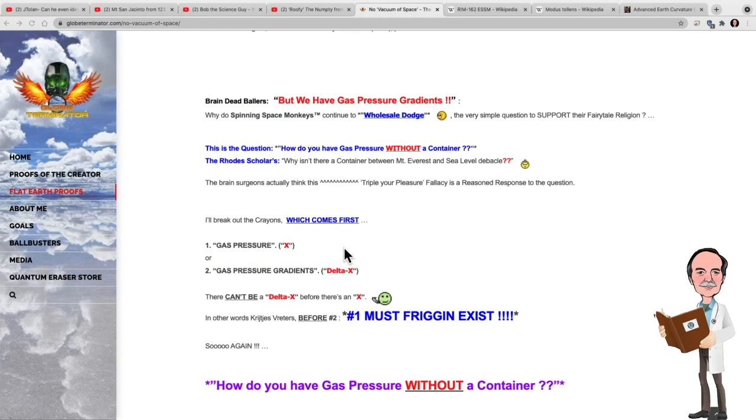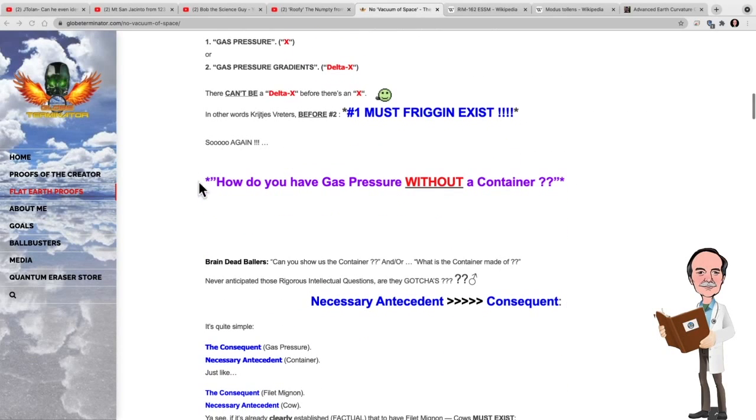Which comes first, gas pressure or gas pressure gradients? What an interesting way of phrasing it. If there is no force on the gas, the gas will simply disperse. And if a force acts upon that gas, you will have a gas pressure gradient.